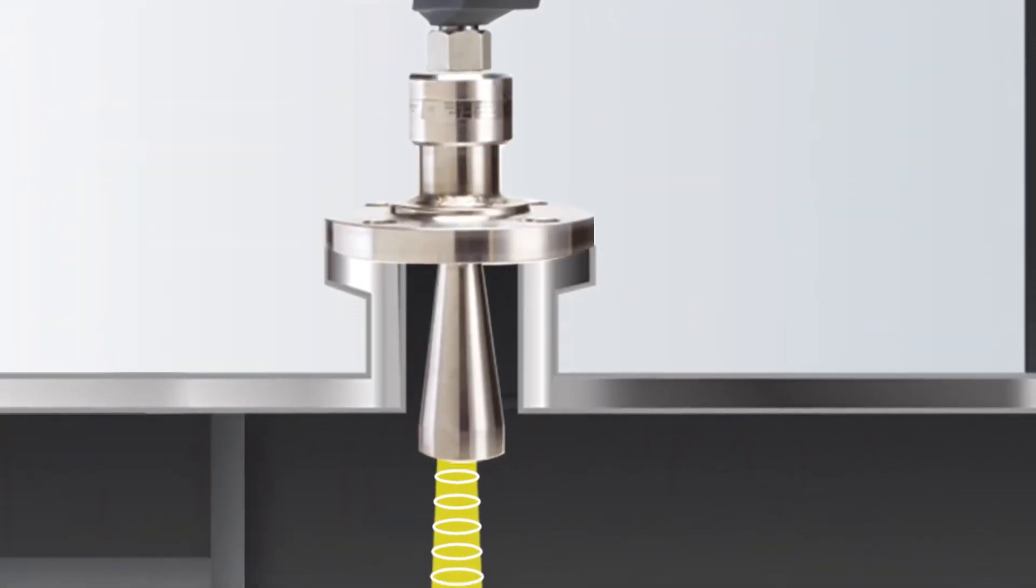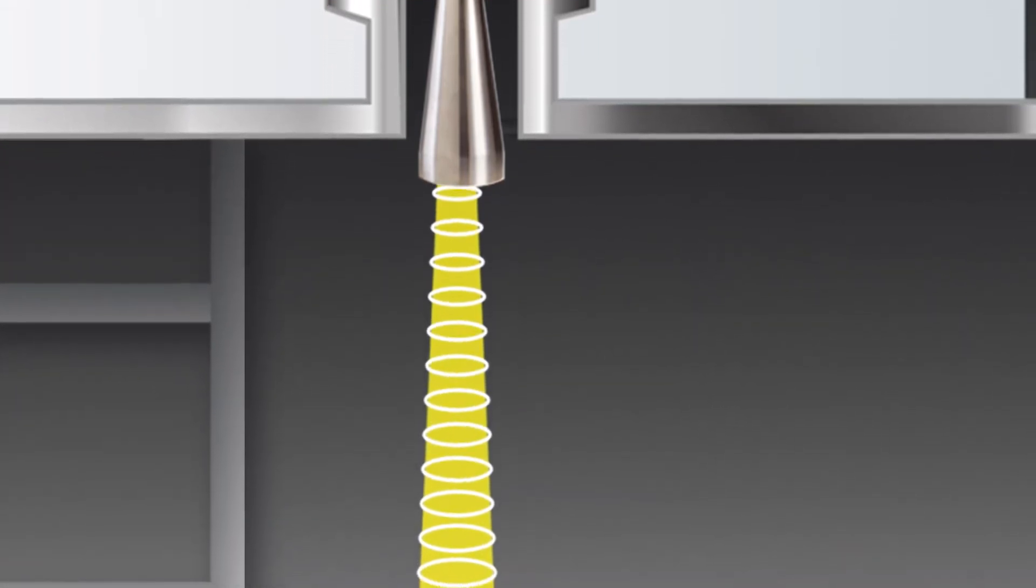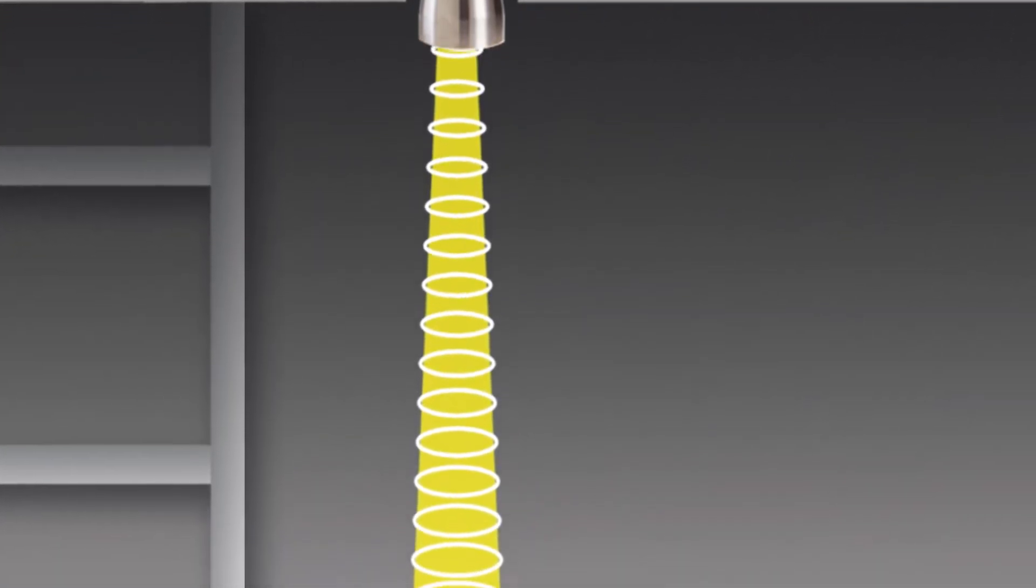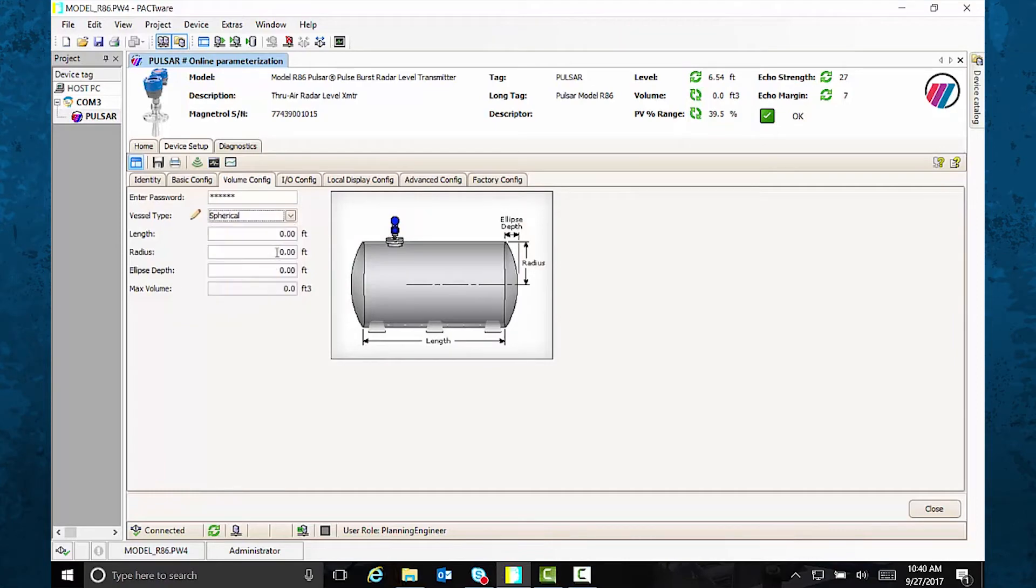The Pulsar Model R86 has a 26-gigahertz radar signal with a shorter wavelength that offers smaller antennas, a narrower beam, and improved accuracy. You can also set it up for your precise need using volumetric configuration. It has nine common tank shapes and a strapping table for uncommonly shaped vessels.